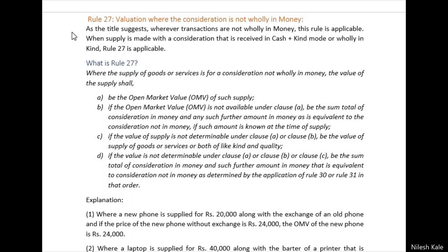There are two conditions that must be satisfied in order to apply Section 15(1) to a transaction: the price has to be the sole consideration and the supply must be made between unrelated parties. Therefore, if the consideration is not fully in money — meaning price is not the sole consideration and you are also considering something in kind, as in a barter system — Rule 27 is applicable in such cases.